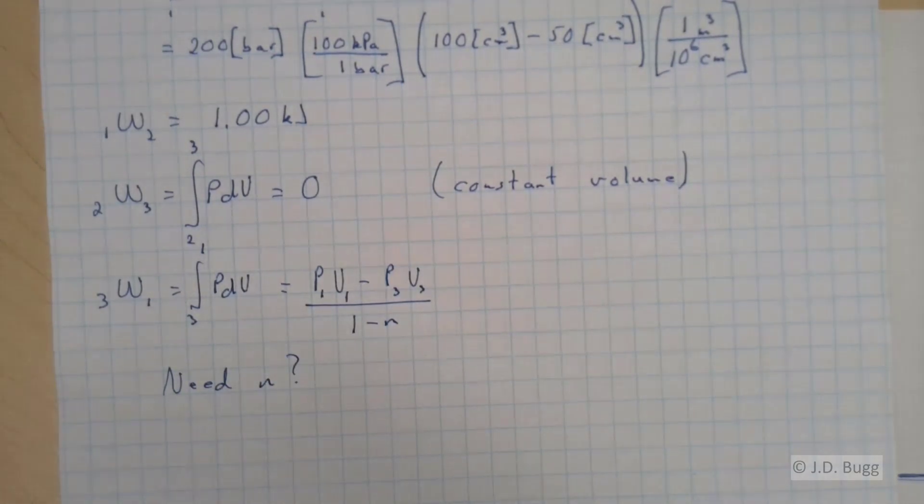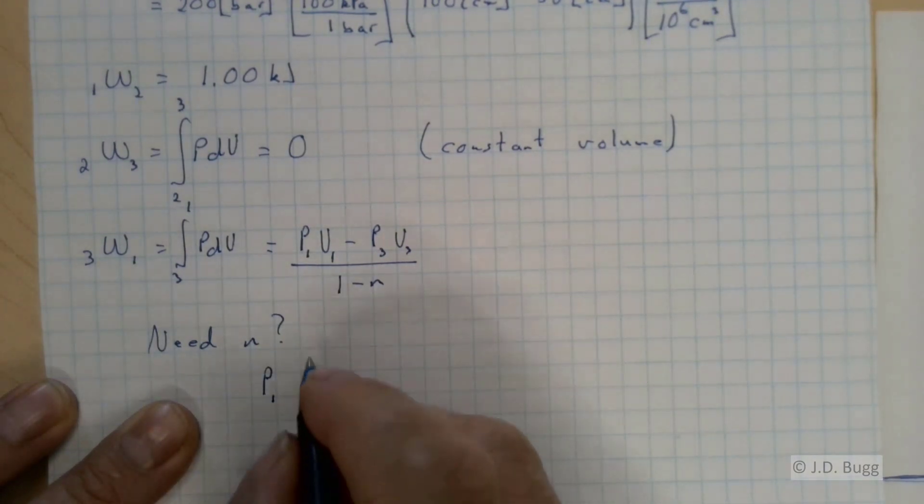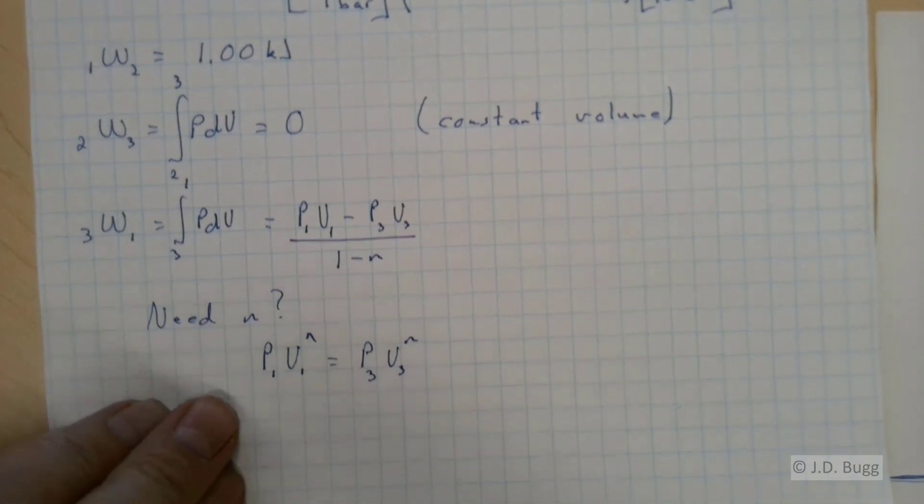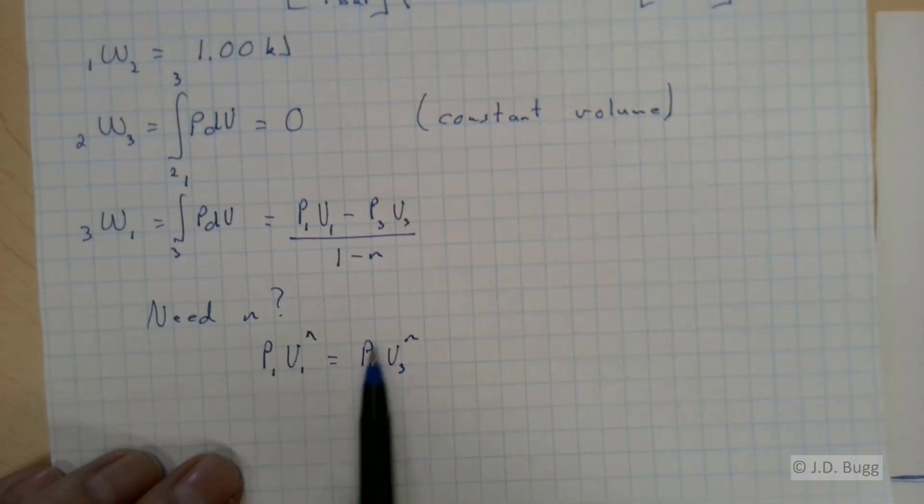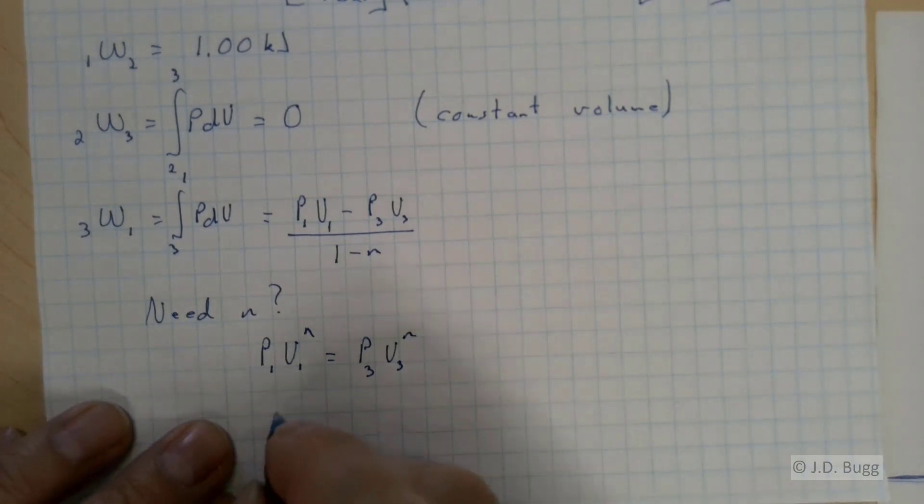The way we can get N is by looking at the polytropic process from point 1 to point 3. So P1 V1 to the N is equal to P3 V3 to the N. We know all these pressures and volumes we can solve for that N. Now, the way to do this, lots of ways to do it, but I'm going to take a ratio of volumes on one side and a ratio of pressures on the other side.